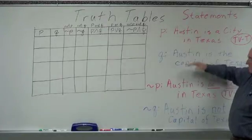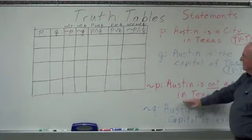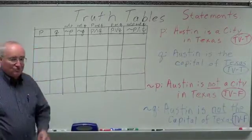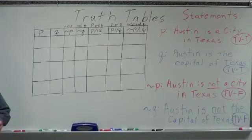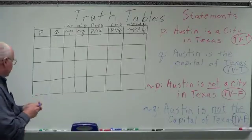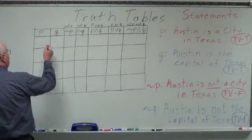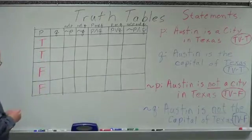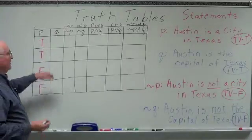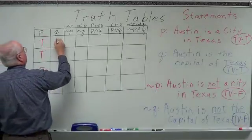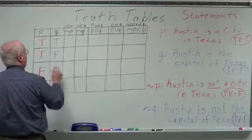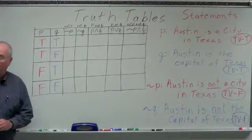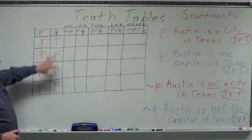So you see, a statement is either true or false. The negation — if the statement is true, the negation is going to be false, and vice versa. In a truth table, we represent all the possibilities: P can be T, T, F, F. When P is true, Q can be true or false. When P is false, Q can be true or false. It saves a lot of pain if you set up your truth table for two statements like this.